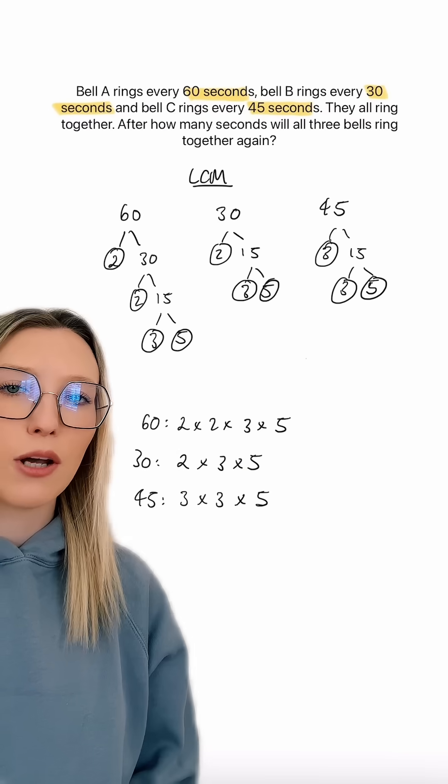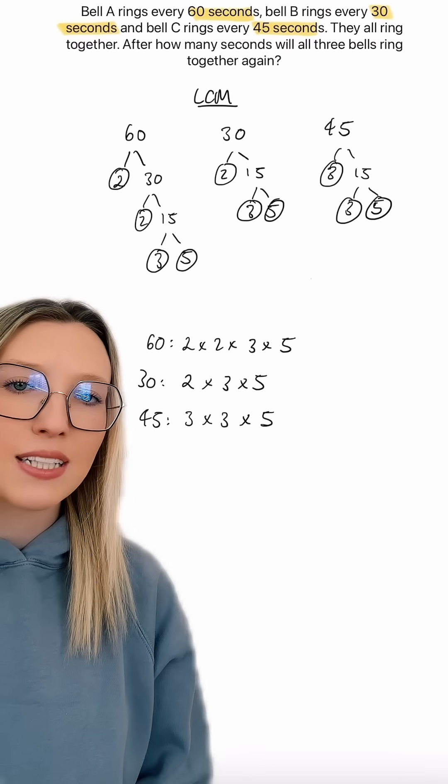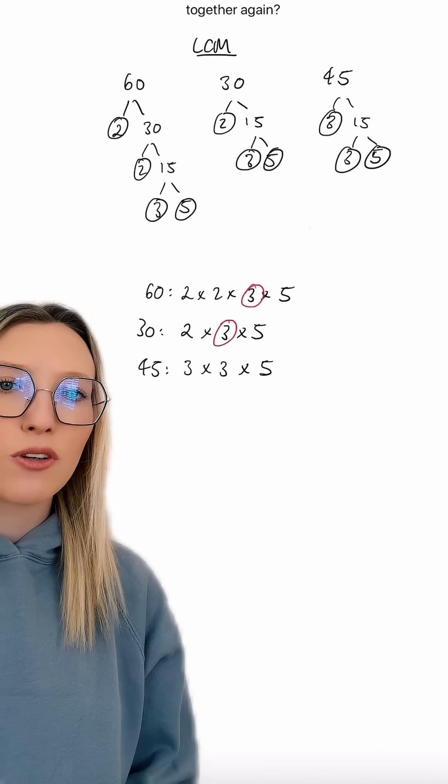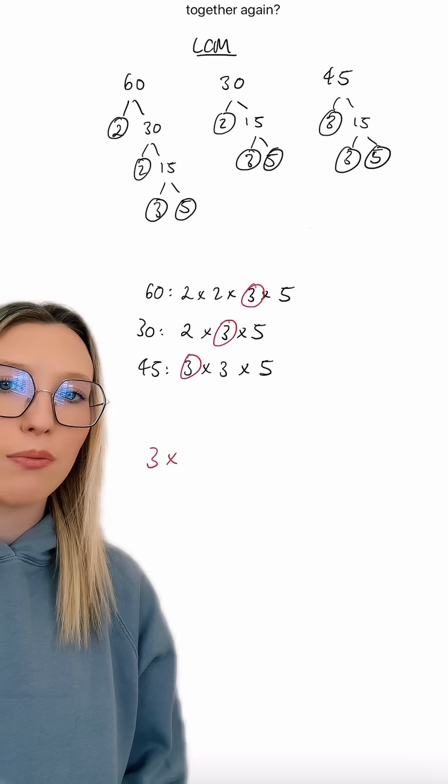Now what we want to do to find the lowest common multiple of these three numbers is to take out any common factors to start.